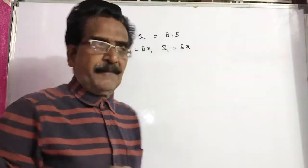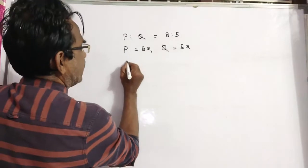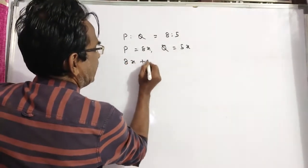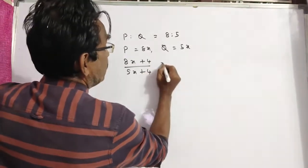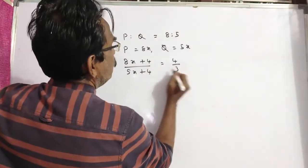After 4 years, the ratio will be 4 is to 3. After 4 years, P will be 8x plus 4 and Q will be 5x plus 4. After 4 years, the ratio will be 4 is to 3.